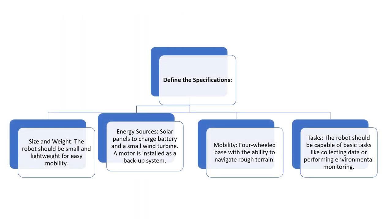Step two: define the specifications. Size and weight — the robot should be small and lightweight for easy mobility. Energy sources will be solar panels to charge the batteries and a small wind turbine. A motor is installed as a backup system. Mobility: a four-wheel base with the ability to navigate rough terrain. The robot should also be capable of basic tasks like collecting data or performing environmental monitoring.